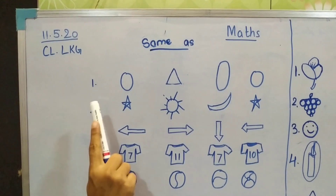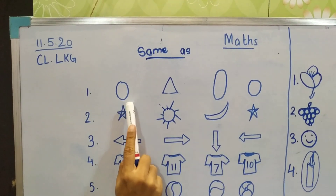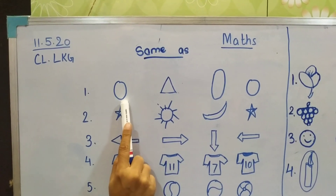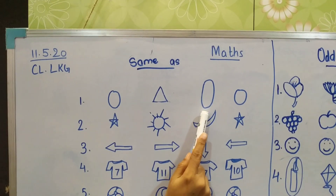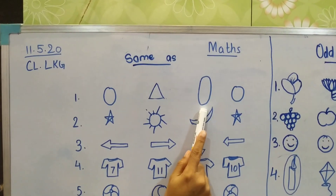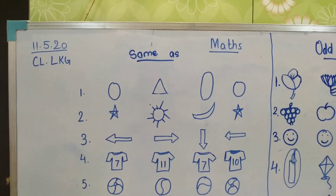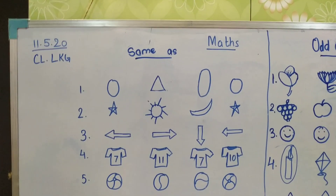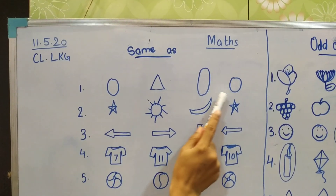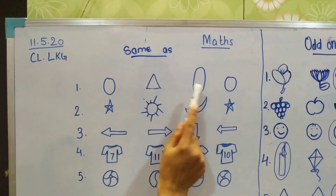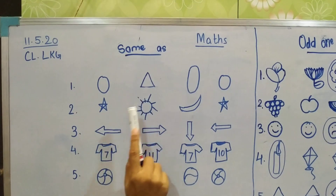Look at the first picture. What is this? Circle, triangle — is this circle? No, it's oval. And then circle. So which two are identical, same? This circle is the same as that circle. So we will color both circles.